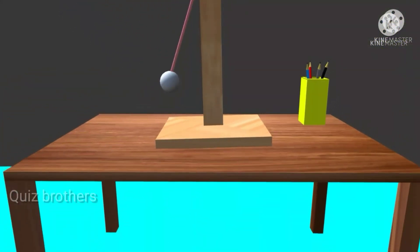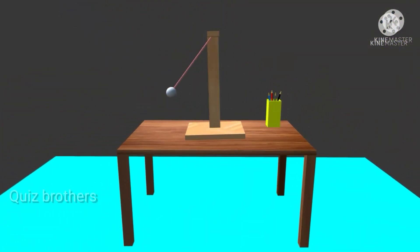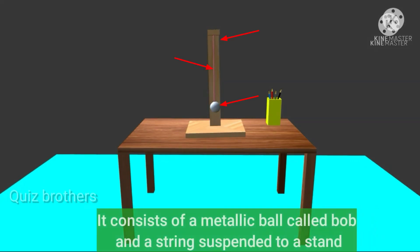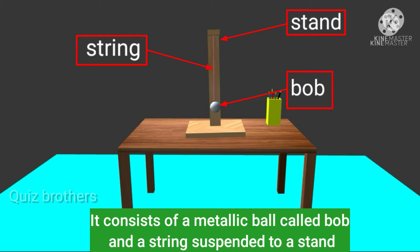This is a simple pendulum. It consists of a metallic ball called bob and a string suspended to a stand.